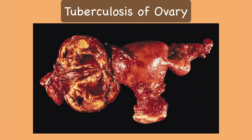Involvement of the ovary is secondary to tubal infection. There is peri-oophoritis which leads to formation of a confluent tubo-ovarian mass containing caseating material. Isolated tuberculosis oophoritis is very rare.